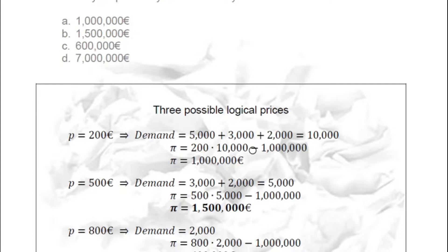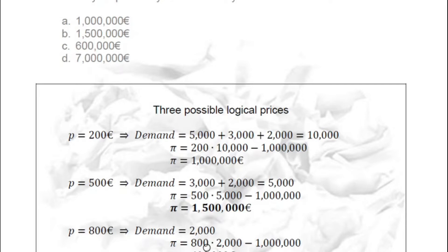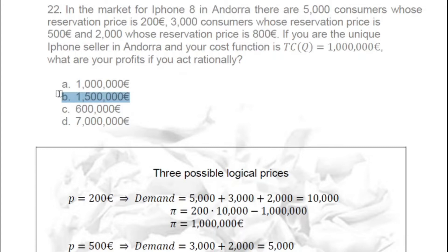At price 200 with 10,000 iPhones sold: 2,000,000 minus 1,000,000 cost equals 1,000,000 profit. If I sell at 500, it would be bought by the two higher-valuation groups — 3,000 at 500 and 2,000 at 800 — so 5,000 iPhones sold at 500 gives 2,500,000 minus 1,000,000 = 1,500,000 profit. At 800, only 2,000 customers buy, so profits fall to 600,000. So I would choose 500.